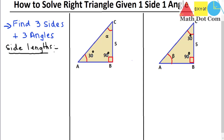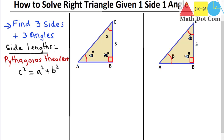For finding the side lengths we have to use the Pythagorean theorem. This theorem is used for measuring side lengths and is only applicable to right triangles — triangles where one angle is 90 degrees. The Pythagorean theorem states: C² = A² + B², or hypotenuse² = base² + perpendicular². This is the formula for finding the side lengths of a right triangle.